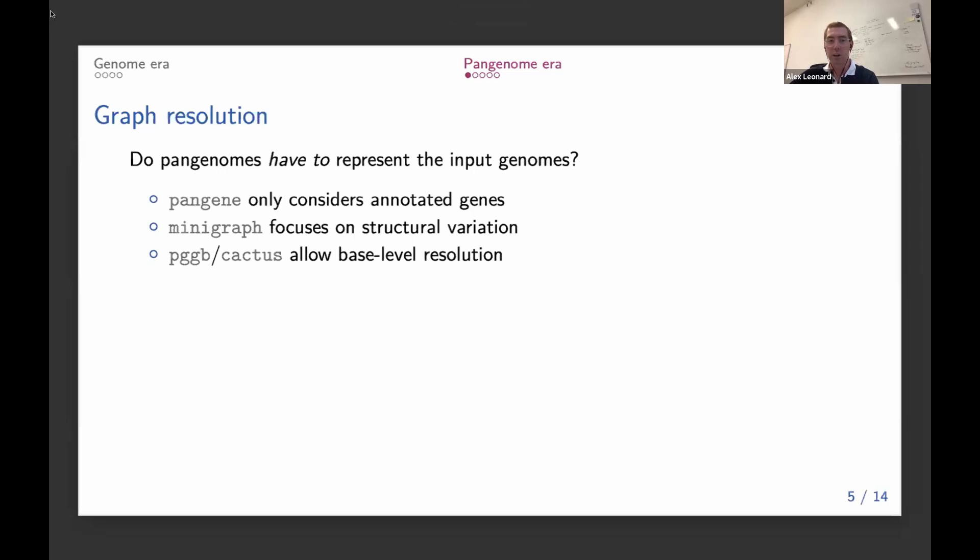So if we have 100 or even 1,000 genomes, do we really need every last drop of information? And this is still an open question that we need to see, what's the right level of detail that's actually useful?